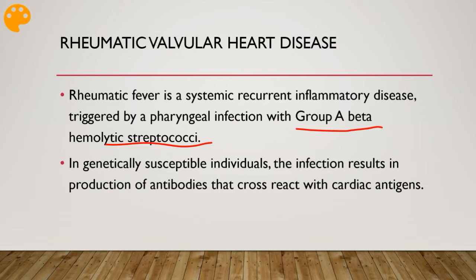An immune response is generated against the bacteria, which has M proteins. These M proteins are antigens that resemble antigens in human tissues. As you generate a response against the M proteins, you begin to generate a response against human tissues as well, resulting in damaged tissues and ultimately acute rheumatic fever.